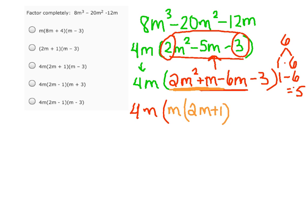And now we're going to look at the second two terms, and we can divide out a negative 3, and what's left is 2m plus 1.